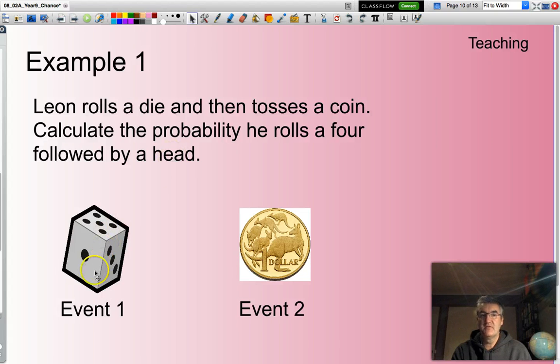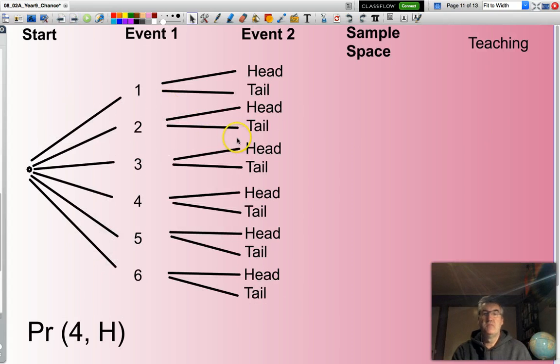There's my two events. Rolling that die, followed by tossing the coin. So again, my two events. First one, rolling a die.